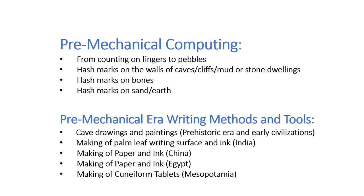During the pre-mechanical era of prehistoric times, the main methods of collecting, interpreting and storing information included counting on fingers and pebbles, hash marks on cave walls, cliff, mud or stone dwellings, and hash marks on sand and earth. The main writing methods during the prehistoric times and early civilization days were cave paintings and drawings. In the earliest four distinct civilizations — Indus Valley, Yellow River, Nile River, and Mesopotamian — each independently developed their own materials and methods of writing and storing information.